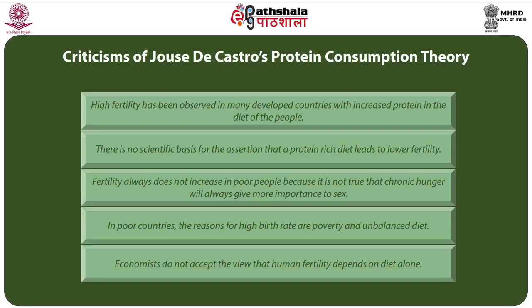Castro concluded that effort should be made to bring more land under the plough with improved farming methods and extensive cultivation. This would only be possible through economic development leading to rising incomes for the poor, which would increase their protein consumption.